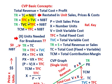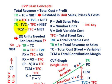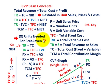So total contribution margin equals total fixed cost plus net income before taxes. For our generalized solution, we set net income before taxes equal to zero and solve for X — the units needed for the break-even point. Total revenues equals total cost, which is total fixed cost plus total variable cost.